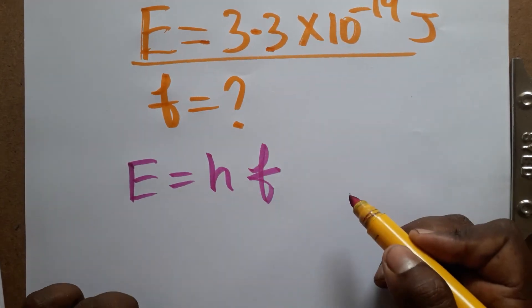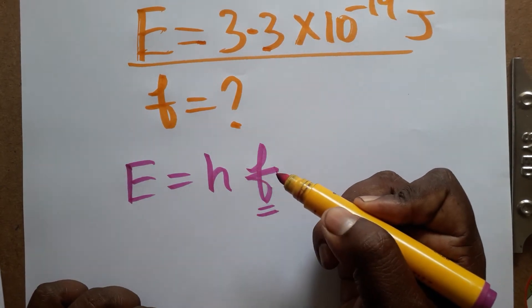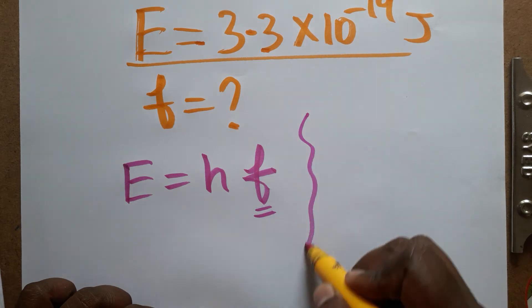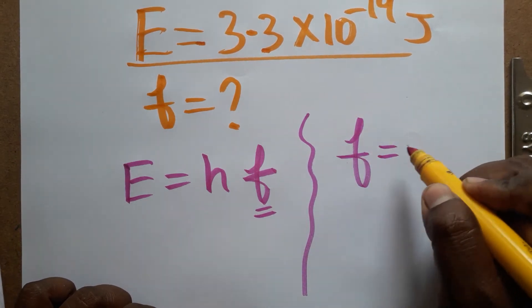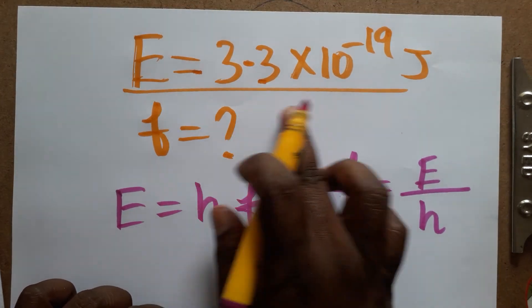It's a very simple formula to find the frequency. Energy is equal to Planck constant times frequency. So if you want frequency, frequency is equal to energy divided by Planck constant.